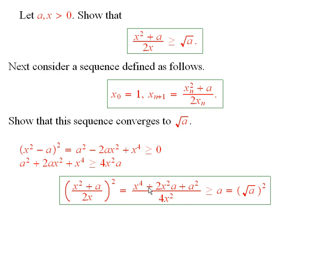So then I have this thing here will be bigger than or equal to a, which is the square root of a squared, and then I can observe that this thing is equal to this quotient, this thing here, squared.